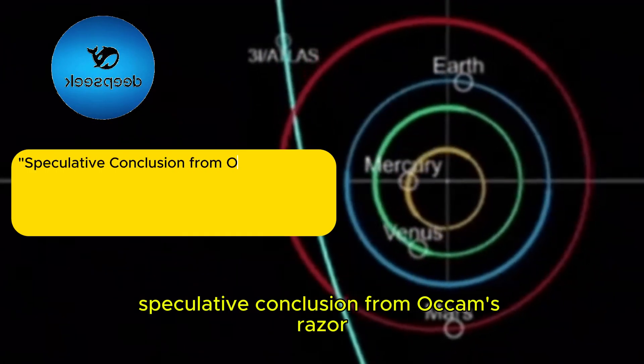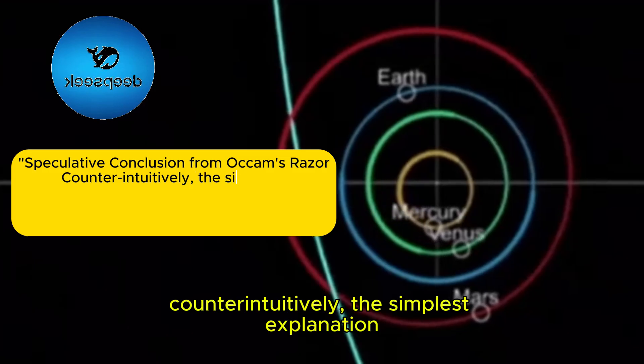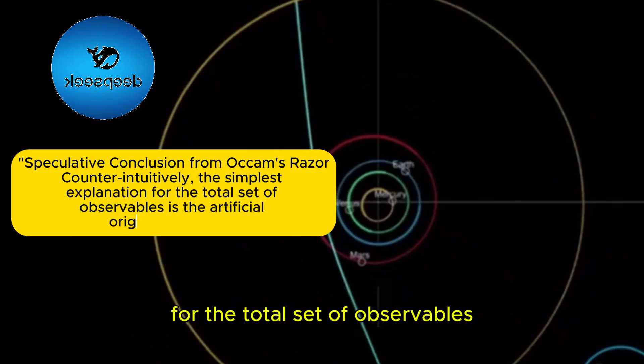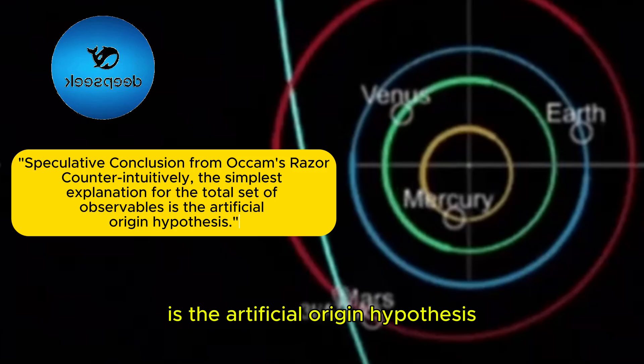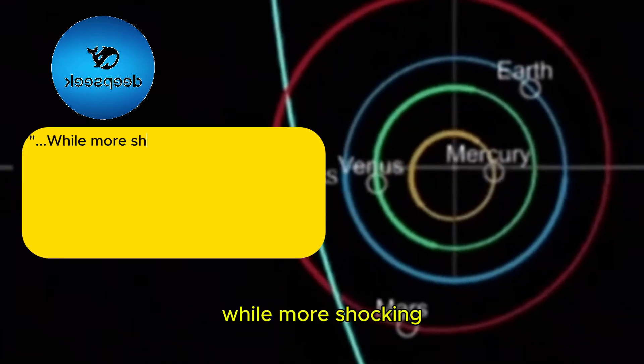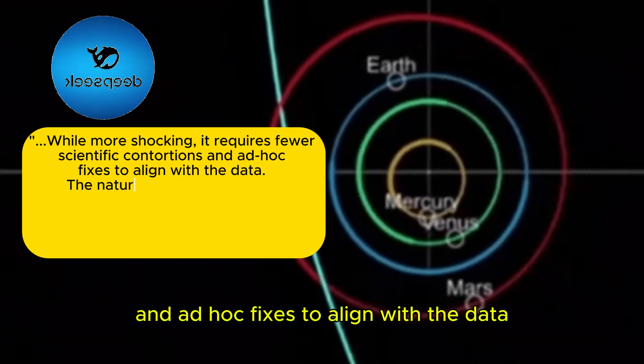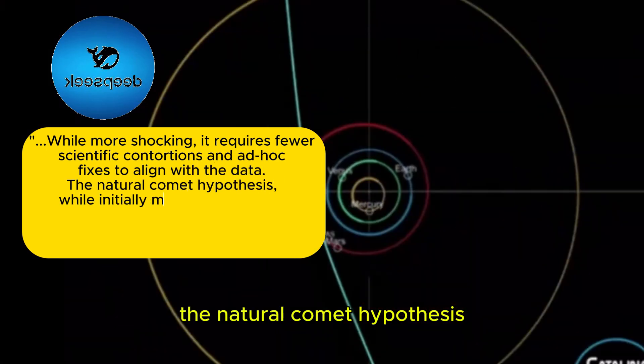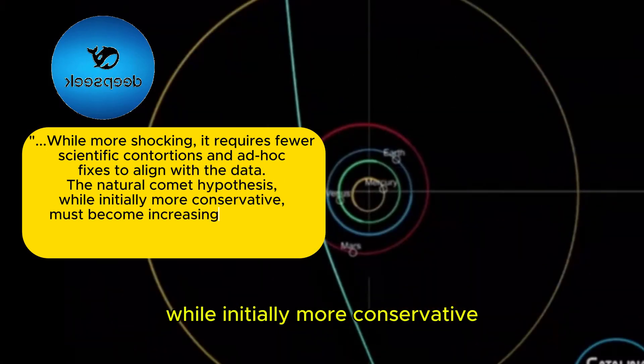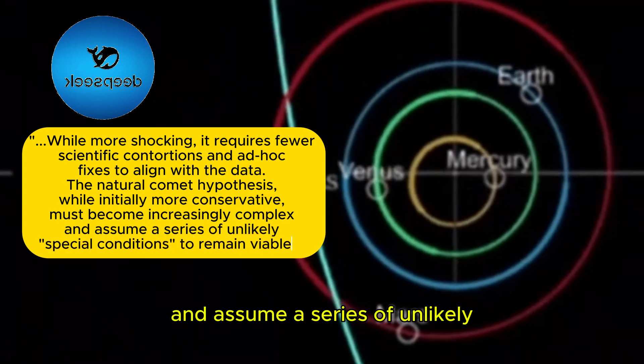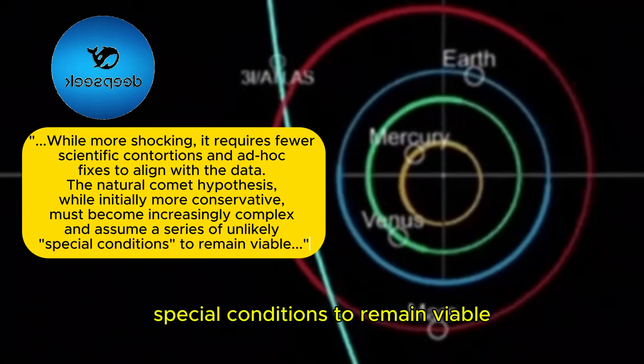Speculative Conclusion from Occam's Razor. Counterintuitively, the simplest explanation for the total set of observables is the artificial origin hypothesis. While more shocking, it requires fewer scientific contortions and ad hoc fixes to align with the data. The natural comet hypothesis, while initially more conservative, must become increasingly complex and assume a series of unlikely, special conditions, to remain viable.